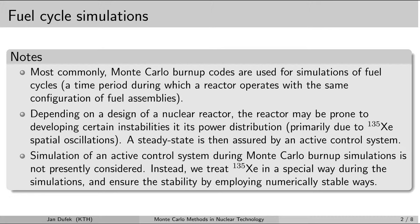A fuel cycle is a time period during which a nuclear reactor operates with the same configuration of the fuel assemblies. Once the fuel assemblies are loaded into the active core, the nuclear reactor can start its operation. It takes typically about a year, after which the reactor is shut down, some fuel assemblies are removed, new ones are loaded, and the configuration is changed so that the distribution of power is optimized. Our objective is the simulation of the fuel depletion in all the different fuel assemblies in the active core during the whole fuel cycle.